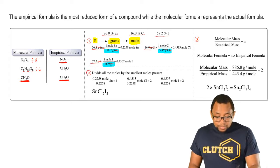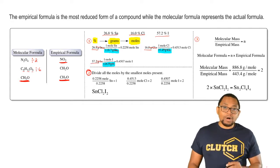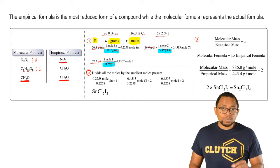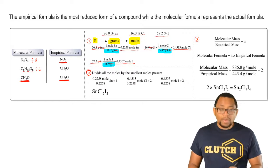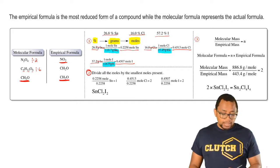This leads us to step two. In step two, you divide all the moles that you found by the smallest moles present. Out of the three amounts of moles we found, 0.2258 would be the smallest, so all those moles get divided by that number.